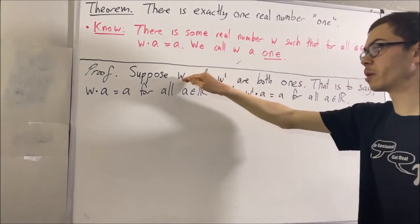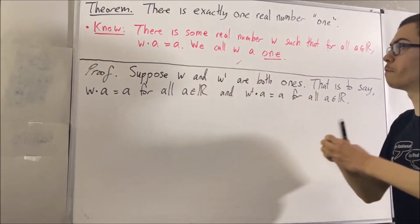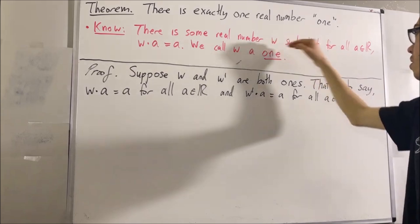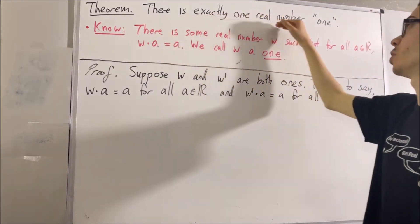Our goal is to prove that w and w prime must be equal to each other, and that will prove that there is exactly one real number that satisfies this statement. In other words, there is exactly one real number one.